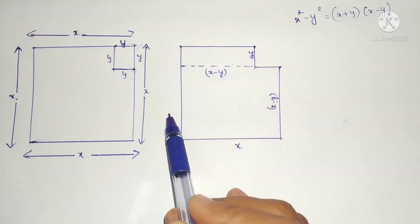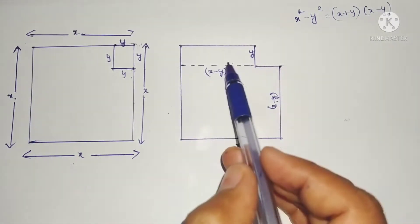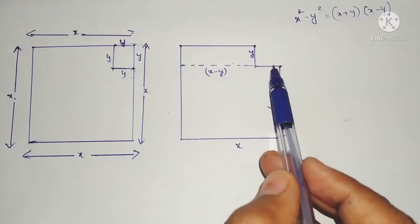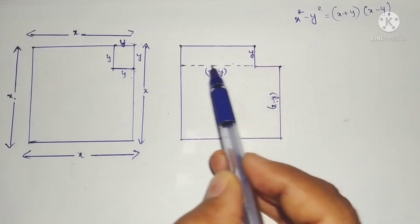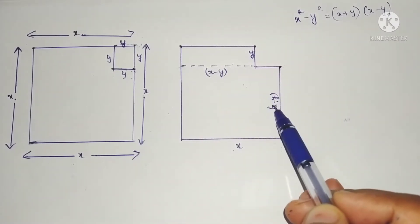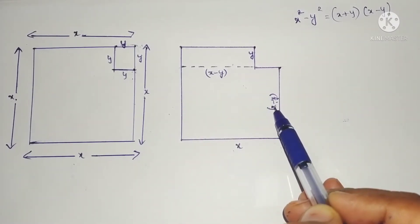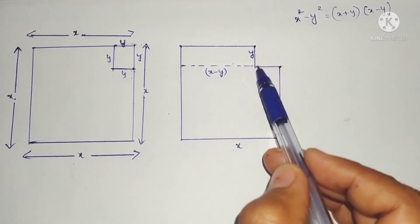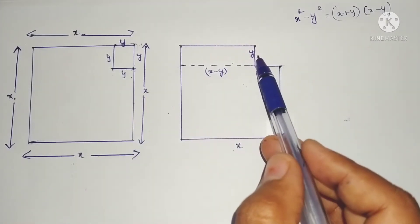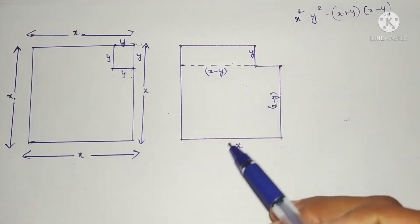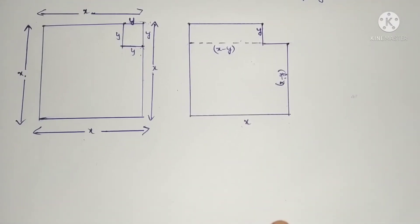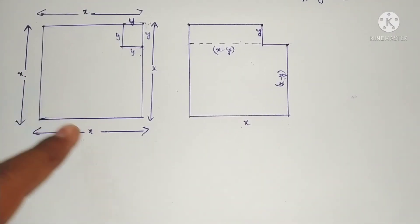The total length here is x. From the x side we are subtracting y, so from here to here the length is x minus y, and this side is also x minus y. This portion of length y we take out, so this breadth will be y.